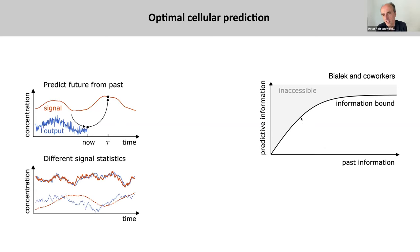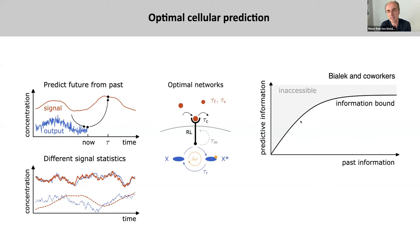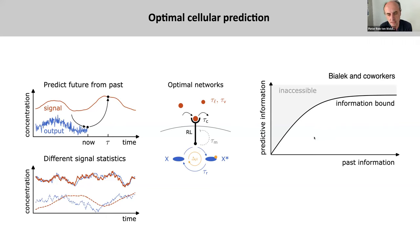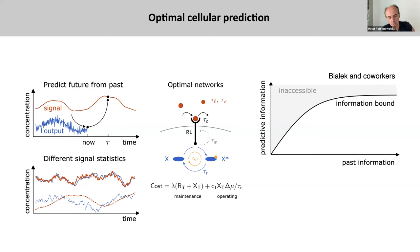How close the system can come to this information bound depends on the design of the system. In particular, to reach the information bound, the cell should extract those characteristics of the past signal that are most informative about the future signal. Moreover, the amount of information the system can extract is determined by how many resources are devoted to maintaining and operating the signaling system — receptor proteins and readout molecules must be synthesized on a timescale set by the growth rate, and signaling systems are typically driven out of equilibrium requiring a chemical energy cost.